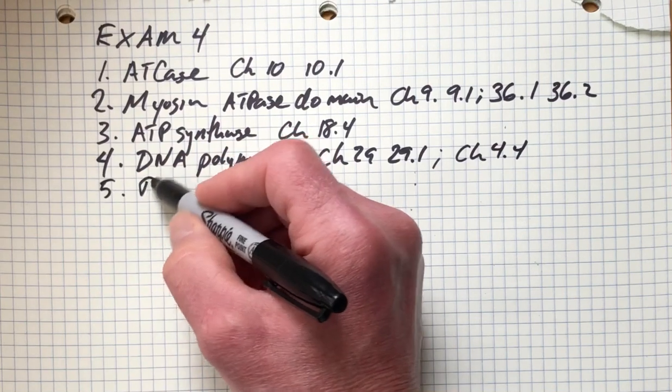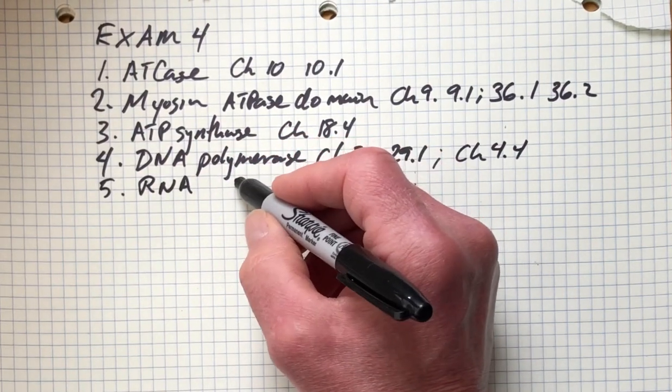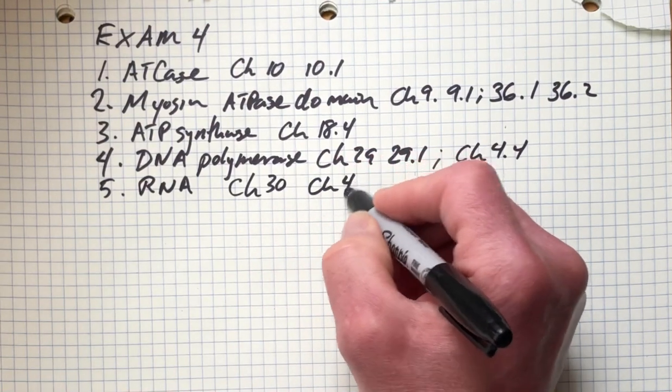Next, we'll look at RNA in general terms. Its structure and chemistry. Read chapter 30, chapter 4.5.